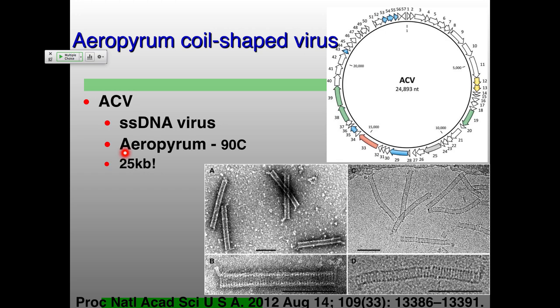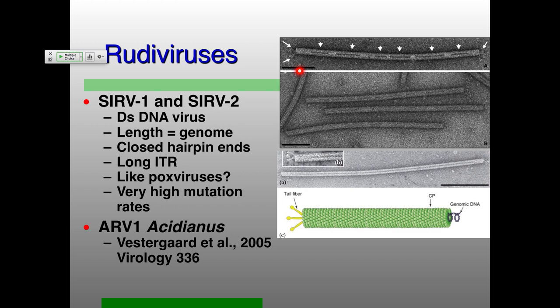This coil-shaped virus doesn't infect Sulfolobus. It infects an even more thermophilic organism called Aeropyrum pernix that grows optimally at 90 degrees Celsius. This is kind of the opposite of what you'd expect — you think single-stranded DNA would be less stable, but it's functioning at these really extreme temperatures. We've learned a lot more about some of the other viruses infecting Sulfolobus — the so-called rudiviruses, also very long structures, almost as long as the cells they infect.